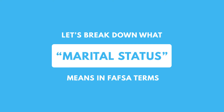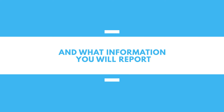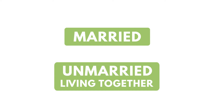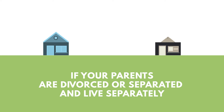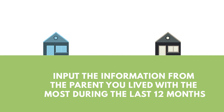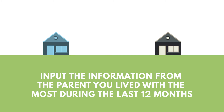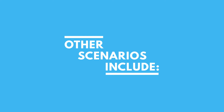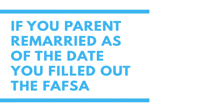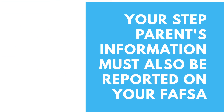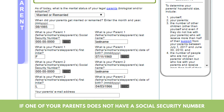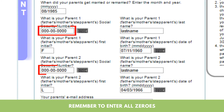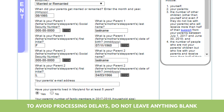Let's break down what marital status means in FAFSA terms and what information you will report. If your parents are married or unmarried but living together, you will be required to provide information for both parents. If your parents are divorced or separated and live separately, input the information from the parent you live with the most during the last 12 months. Other scenarios include: if your parent remarried as of the date you filled out the FAFSA, your step-parent's information must also be reported on your FAFSA. If one of your parents does not have a social security number, remember to enter all zeros. To avoid processing delays, do not leave anything blank.